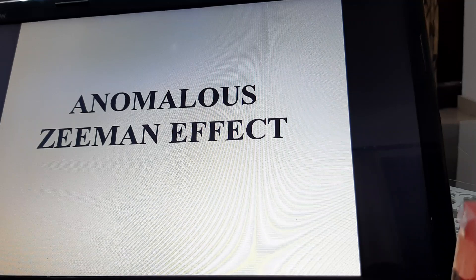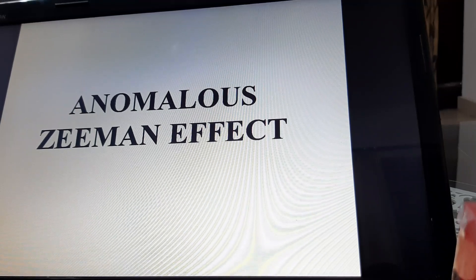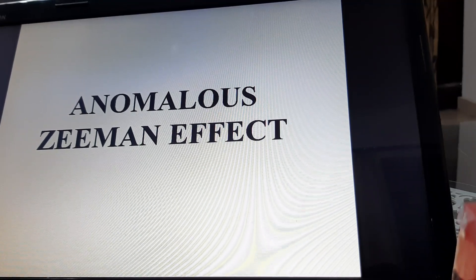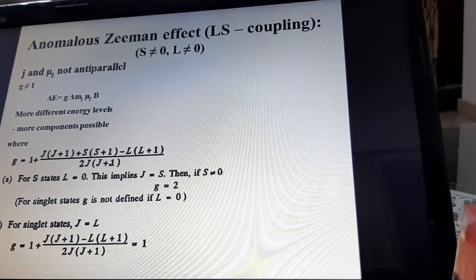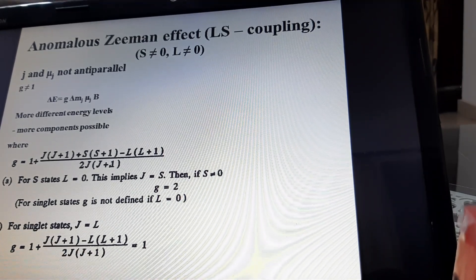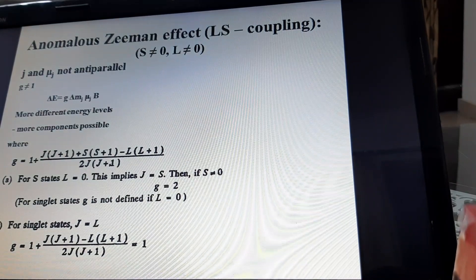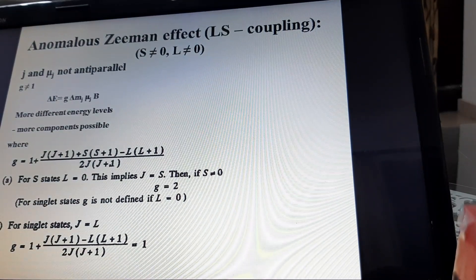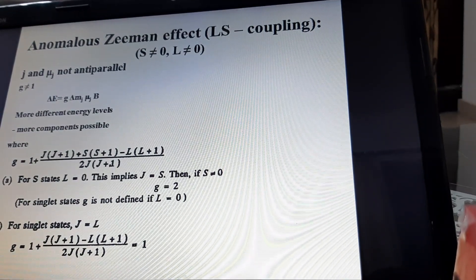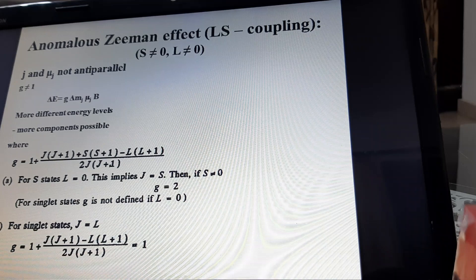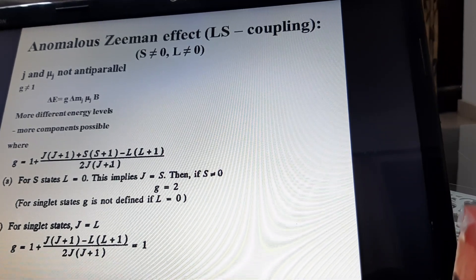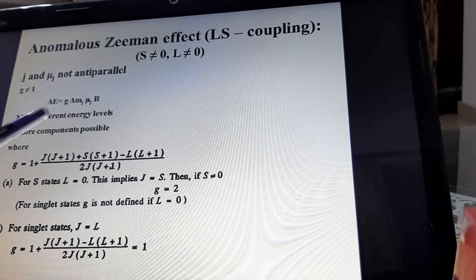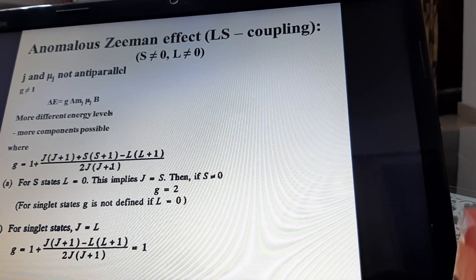The second effect is the anomalous Zeeman effect. In this effect, both S values and L values are non-zero. In this case, the total J value and μ_J are not anti-parallel, and G is also not equal to 1.